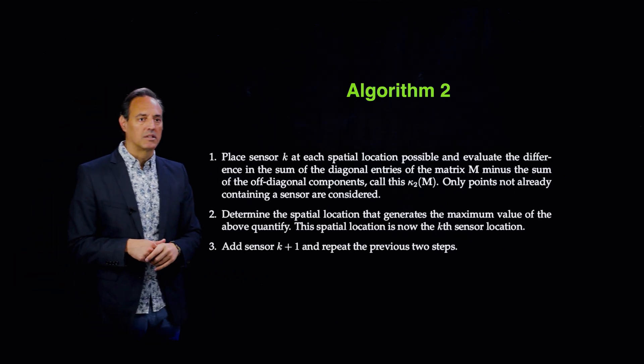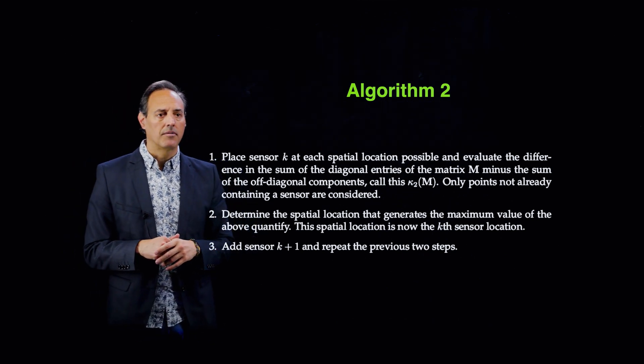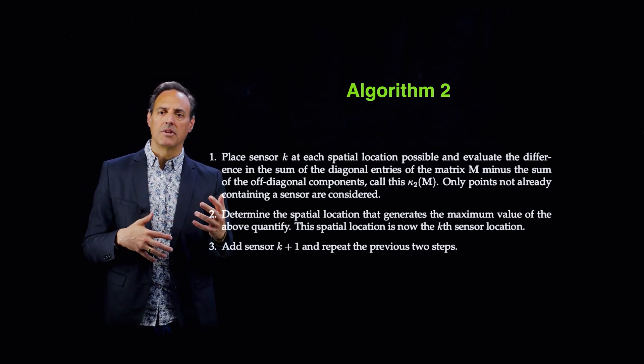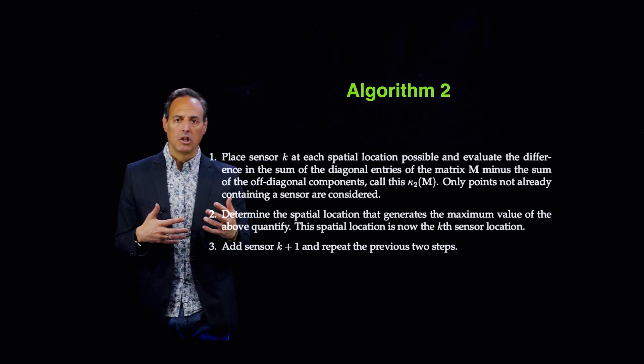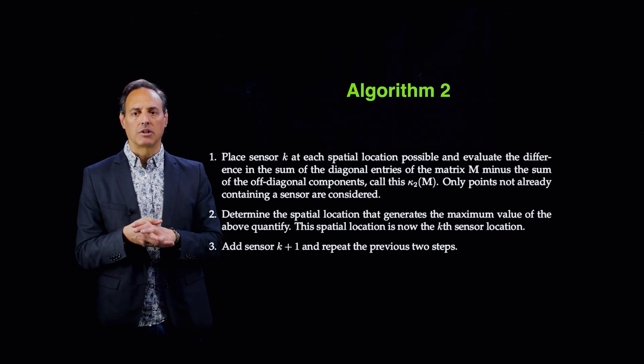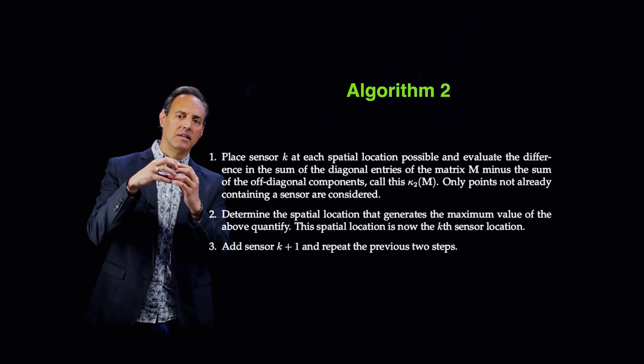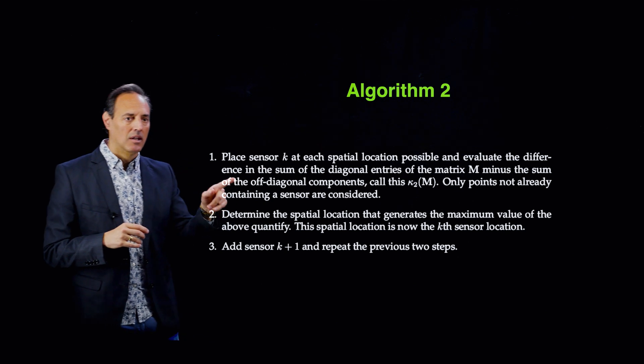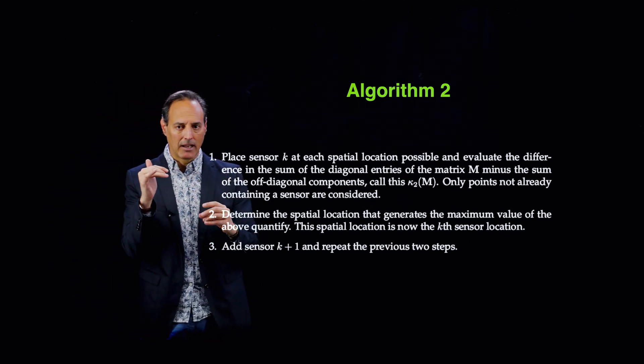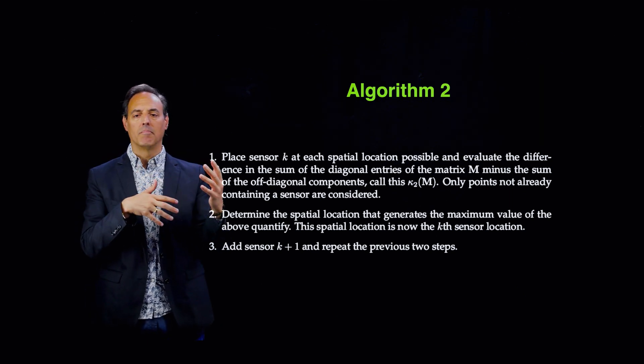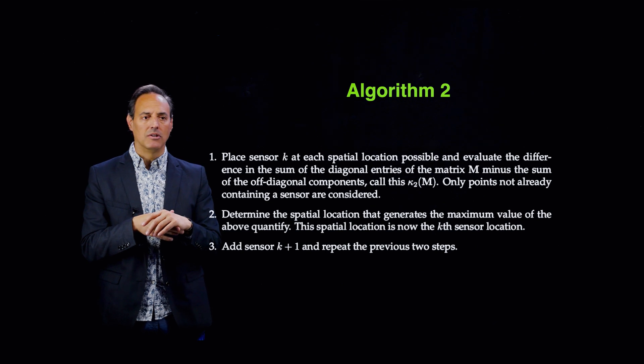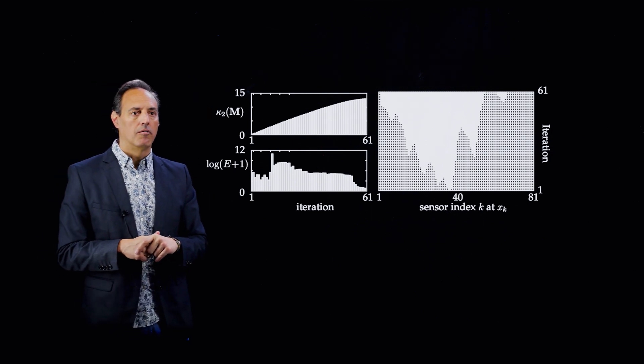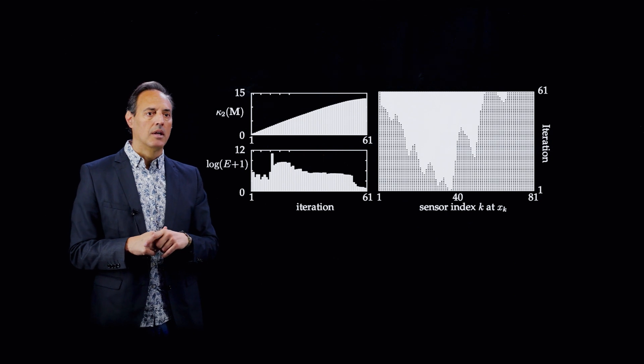Here's another algorithm that Wilcox developed. It's just slightly different in how you pick these things. The idea here is looking at the sum of the diagonals against the sum of the off diagonals and trying to basically pick locations in which it's more and more diagonal in structure—not the condition number, but trying to make this M matrix look as diagonal as possible. I will look at the sum of the diagonals minus the sum of the off diagonals. If I do that and just start picking locations, here's what you get.